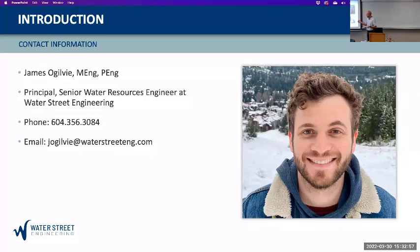This is James Ogilvie. James and I used to work together at a company called Golder, and we did a lot of work together on the Mount Polly project. James is an environmental engineer from the UK, where he got his bachelor's and master's in environmental engineering. For the past decade or so, he's worked at environmental consulting firms in Canada — Worley Parsons, Golder — and then for the last year and a bit, Water Street Engineering, where he's a principal and senior water resource engineer.